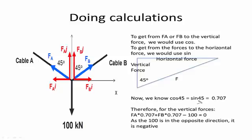So we have cos 45, which is equal to 0.707. So we have the vertical force of FA times by 0.707, plus the vertical force of B times by 0.707, minus 100, as the 100 is going downwards, this way. So it's a negative sign. So this is our first equation of equilibrium.